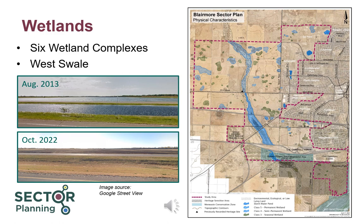The Natural Area Screening identified six wetland complexes in the Blairmoor sector, notably the West Swale, which runs north-south through roughly the middle of the sector and extends into the RM of Corman Park on both ends. Within city limits, the West Swale has both Class IV semi-permanent wetlands and Class V permanent wetlands. Due to the shallow depth of the swale and presence of the rail yard that has blocked the natural outlet of the swale since the 1960s, the West Swale is prone to fluctuations in water levels. The extremities span from wet conditions in 2013 that nearly flooded the highway, to dry conditions in 2022 in which most of the swale, including Class V wetlands, were completely empty of water. The sector plan includes requirements for hydrogeological and ecological field studies of the West Swale before any adjacent concept plan can be considered.